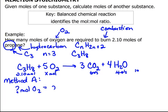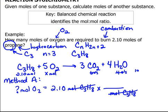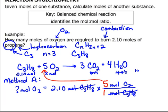Given 2.10 moles of C3H8, how many moles of O2? I need to get rid of moles of C3H8 by dividing them out. I can use a mole-to-mole ratio — it's called that because both top and bottom are in moles. The numbers come from the balanced chemical equation: 5 moles of O2 over 1 mole of C3H8. That 5 literally comes from the balanced equation, and the 1 is the implied coefficient in front of C3H8.